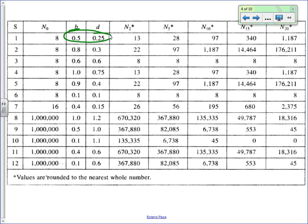You can see those scenarios play out in the table. In simulation 1, the birth rate is 0.5 and the death rate is 0.5, yet the population is actually going up slightly each time. In simulation 3, the birth rate and death rate are the same, so the number of organisms in each generation doesn't change. In simulation 8, where the death rate is bigger than the birth rate, starting with a million, the population continues to go down.